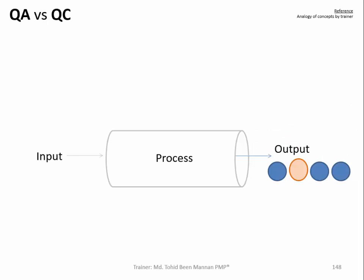Before we jump into project quality management, we want to know the three processes. As per PMBOK, there are three processes: Plan Quality Management, Perform Quality Assurance, and Quality Control. There is always a dilemma between quality assurance and quality control, and we will try to understand the difference between them.